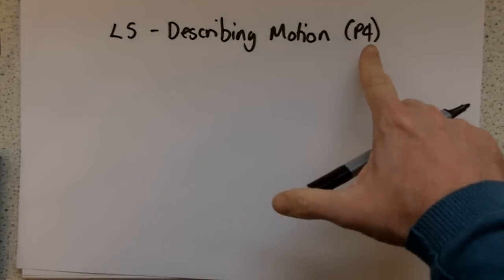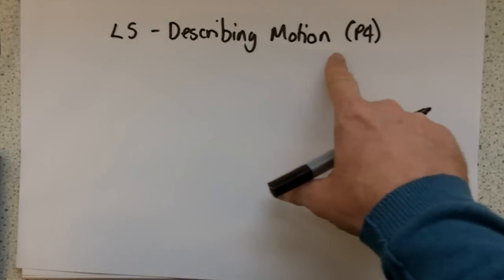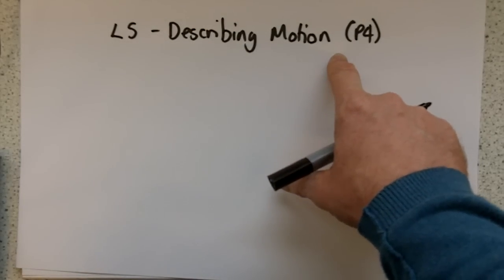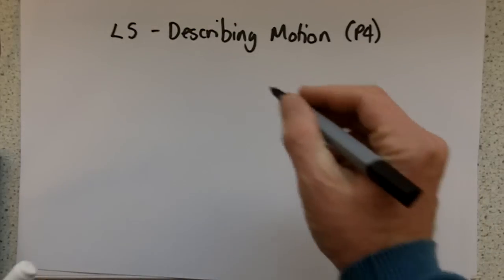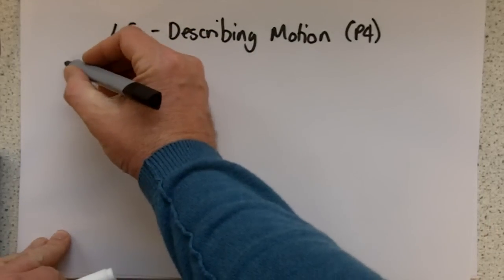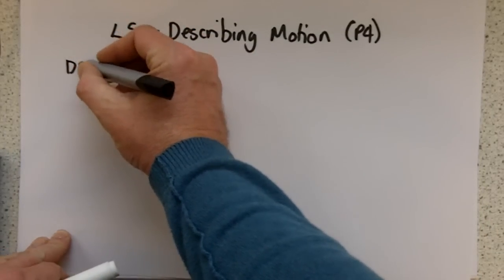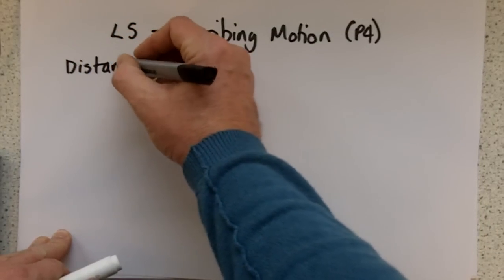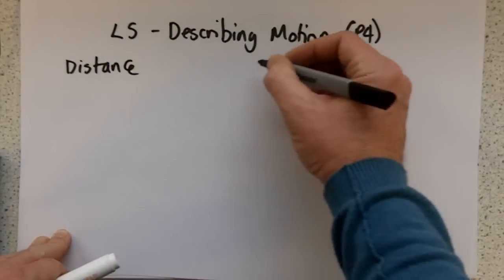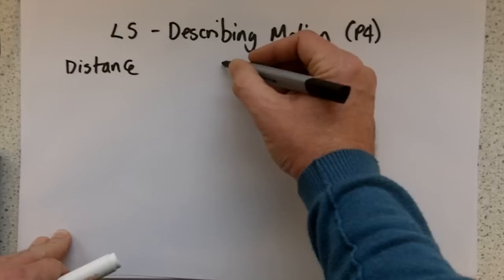Welcome to Lesson 5 for the OCR 21st Century Science Revision videos on unit P4, which is explaining motion. In this video we're going to look at how we describe motion and we're going to define some terms.